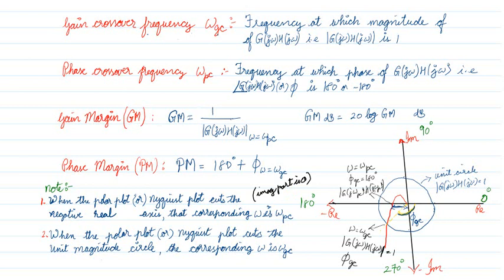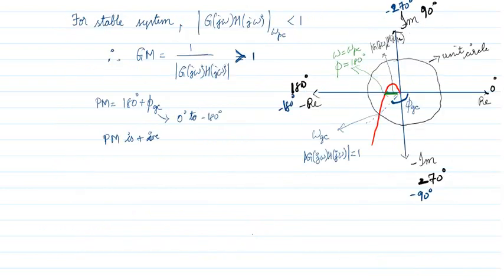The second point: when the polar or Nyquist plot cuts the unit magnitude circle, the corresponding omega is ω_gc. This is the unit circle. The point at which the plot cuts the unit circle is called ω_gc. These are essential things you should know.